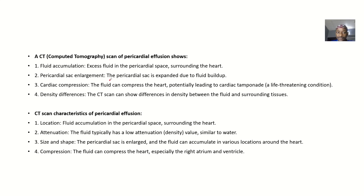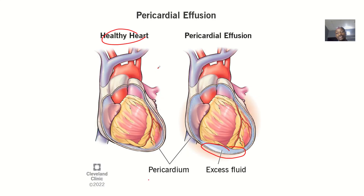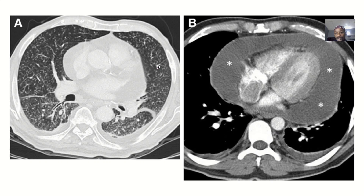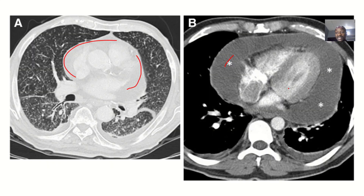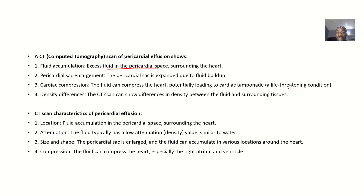A CT scan or computed tomography scan of pericardial effusion may show the following. There will be fluid accumulation — that's excess fluid in the pericardial space surrounding the heart. It shows excess fluid in the pericardium surrounding the heart. This is a very big enlarged heart and I can see fluid surrounding it. The pericardial sac will be enlarged due to fluid buildup.